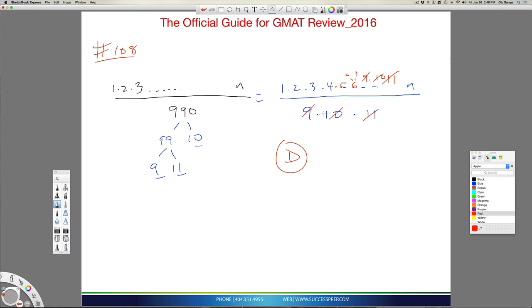Just because we break down the 990 and we really spot what's inside and we see that everything at the bottom has to be used up for a number to be divisible and that's your answer.